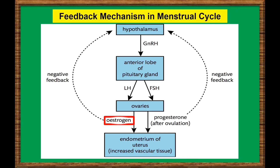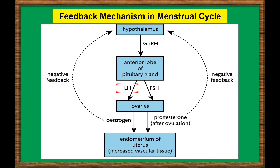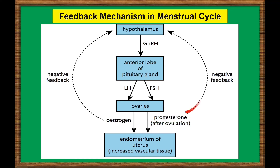Estrogen also stimulates the release of luteinizing hormone, or LH, from the pituitary gland, which in turn controls the production of progesterone. High levels of progesterone then inhibit or stop the further release of luteinizing hormone.